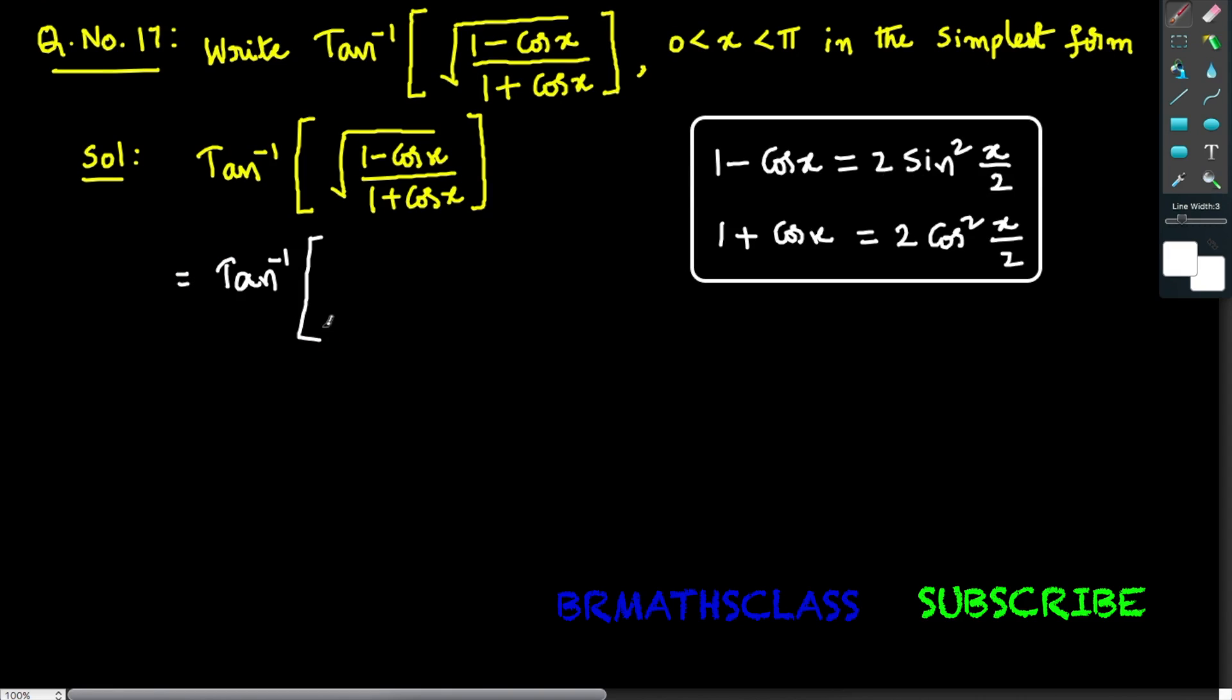That equals tan inverse of square root of... now you observe this 1 minus cos x. What is the formula for 1 minus cos x? It is 2 sin squared (x/2). So in place of 1 minus cos x, I've written 2 sin squared (x/2).